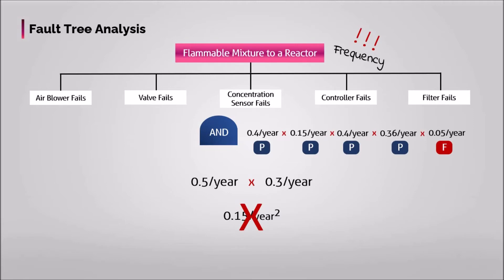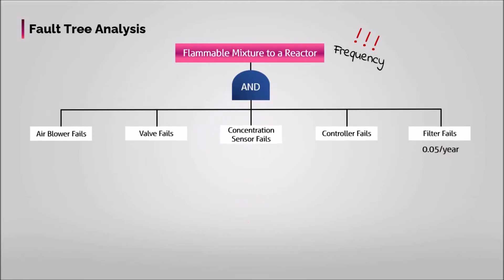So, to define the frequency of the top event, just keep one frequency for one of the precursors and find the probabilities for others.